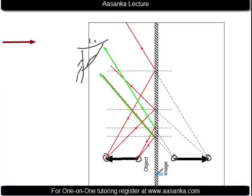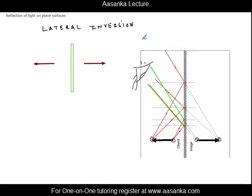What we have discussed here — the technique of ray diagram creation and then location of the image — is something that will be used all throughout. You can also say what we have studied so far is the formation of images in a plane mirror when the object is an extended source, since it has some length. But what happens when the object is a point source? We are studying the formation of images in a plane mirror if the object of light is a point source.